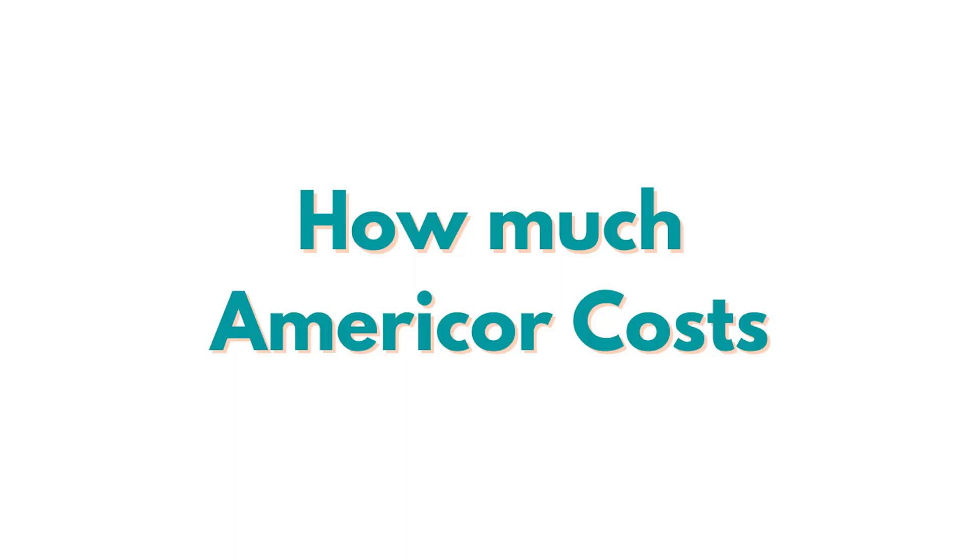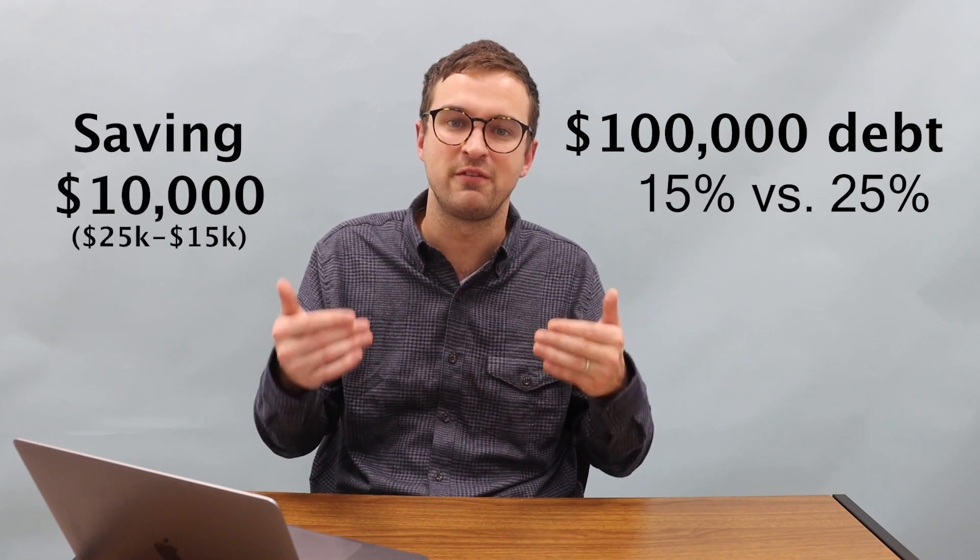So how much does AmeriCorps cost? Often debt relief companies will tell you that the fees are included in their plan payment, and the plan payment's already a lot less than what you're paying. But it's really important to know that the differences are often huge. So AmeriCorps could charge you 25% of your enrolled debt, and many companies charge between 15 and 25%. And that amount can be monumental. So let's say you have $100,000 in debt, a 25% fee versus a 15% fee is $10,000 in fees additionally.